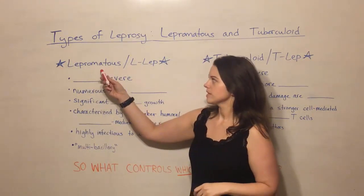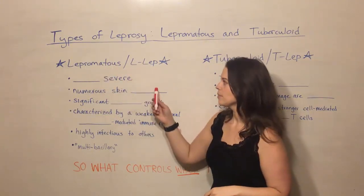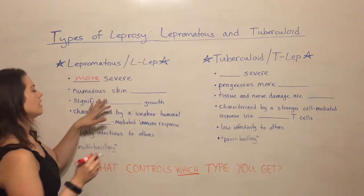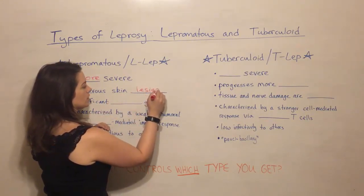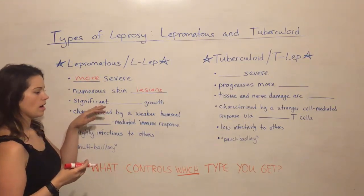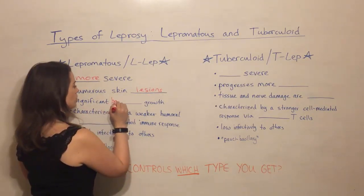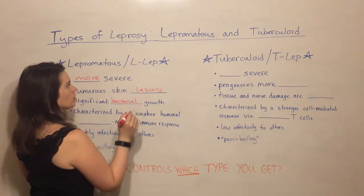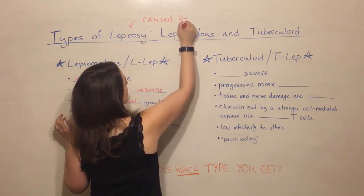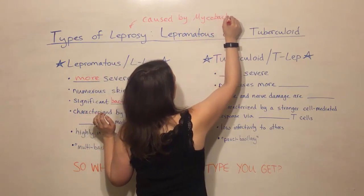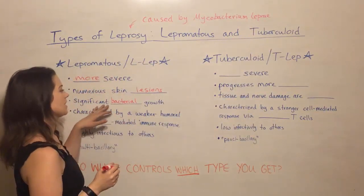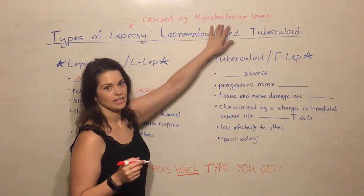Let's start by talking about lepromatous leprosy, sometimes referred to as L-LEP. It is the more severe type. It creates numerous skin lesions, so it's very apparent that this person has something like leprosy. It's also characterized by significant bacterial growth, because leprosy is caused by a bacterium known as Mycobacterium leprae.